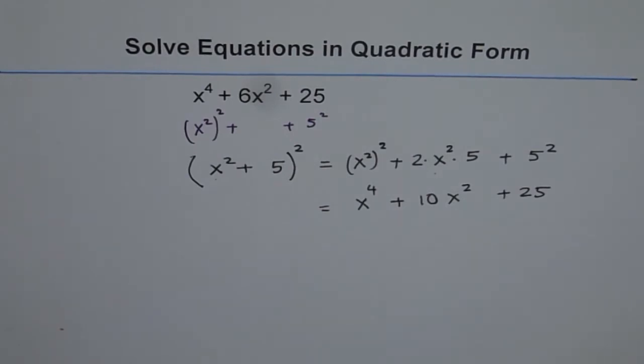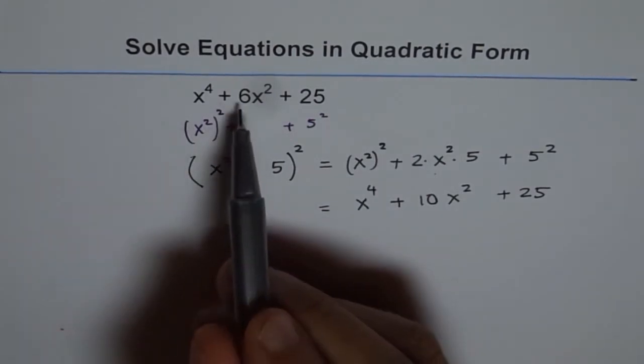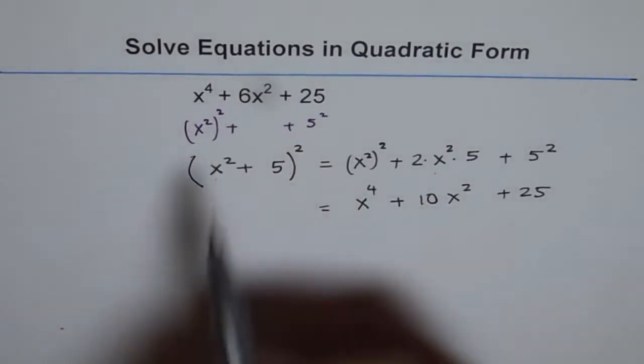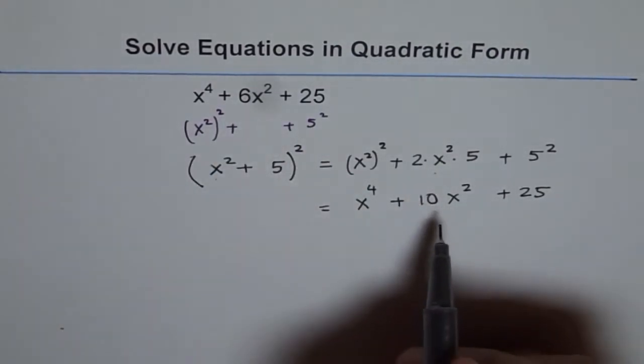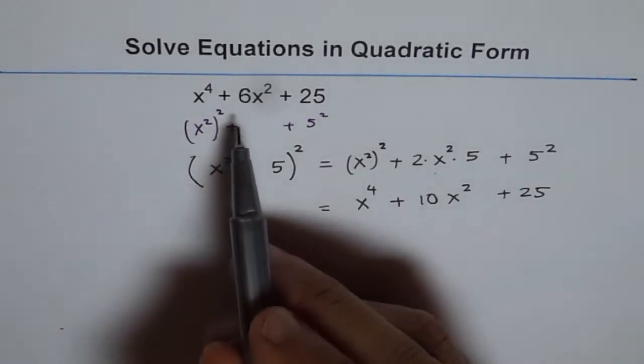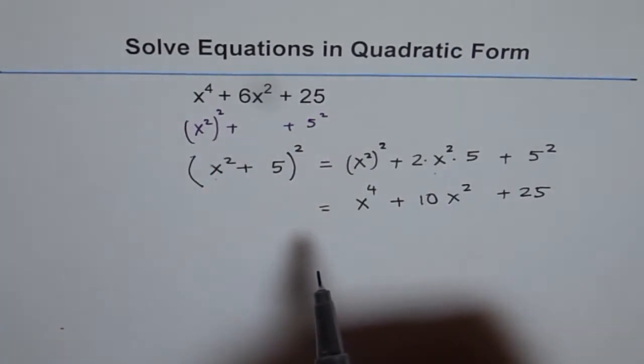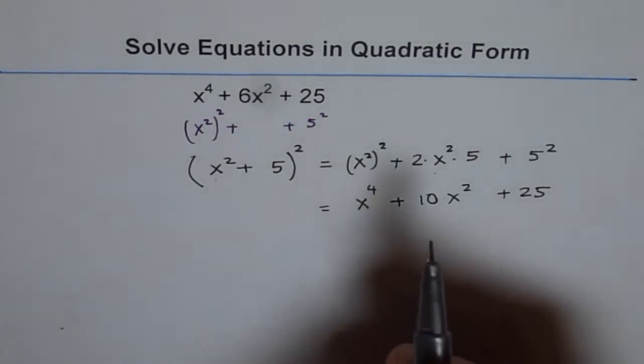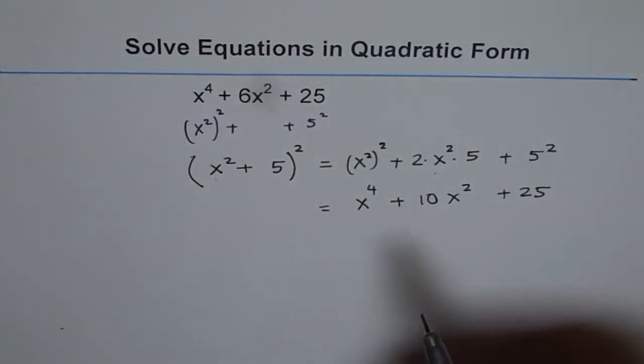So if we do so, that means what we are trying to do is we are trying to make this 6x^2 as 10x^2. And how can I make 6x^2 as 10x^2? By adding 4x^2. 4 plus 6 will make it 10, correct?